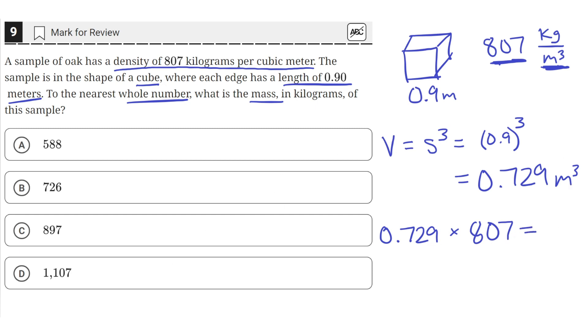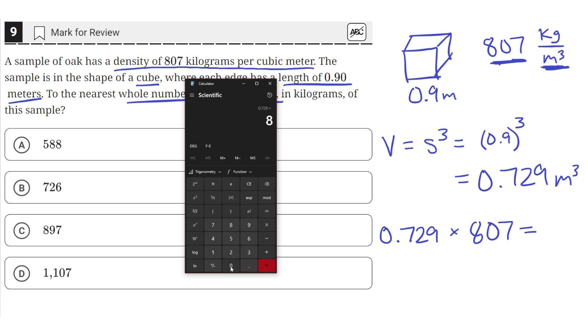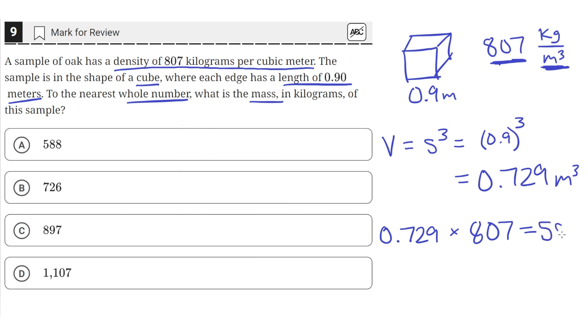So 0.729 times 807 equals about 588, which is the total kilograms, or the mass of this cube. So A is the correct answer.